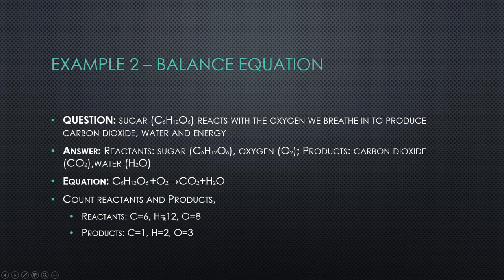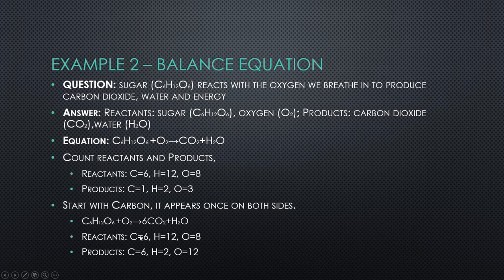So in the reactant side we have 6 carbons, 12 hydrogens, 8 oxygens and on the right hand side we have 1 carbon, 2 hydrogens and 3 oxygens. So if you look at this we can see on the right hand side there's only 1 carbon and there's 2 oxygens dependent. So let's work on the carbons first. The number of carbons we need, we need 6 carbons. So we need to put a 6 in front of that, that means you have 6 here. And what it means is we have now 6 carbons. So the carbons are sorted out.